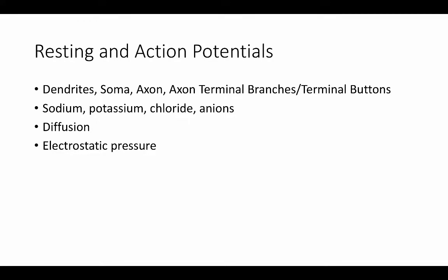In the case of neurons, I think the main things that are hard to understand are resting potential and action potential. And within that, there are the different parts of the neurons: dendrites, soma, axon, terminal branches and terminal buttons. And then we've got four types of ions, two positively charged ones, sodium and potassium, two negatively charged types of ions, chloride and then other anions.